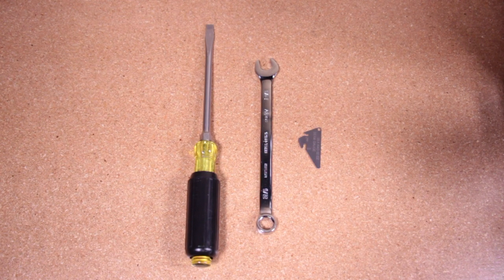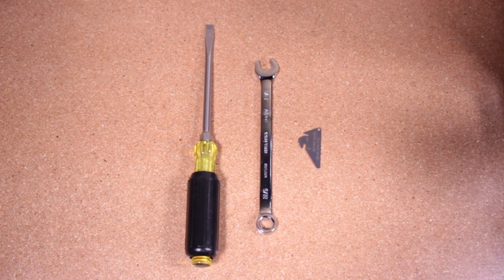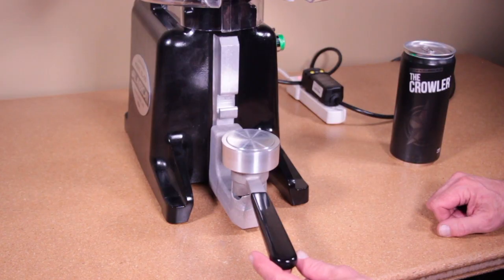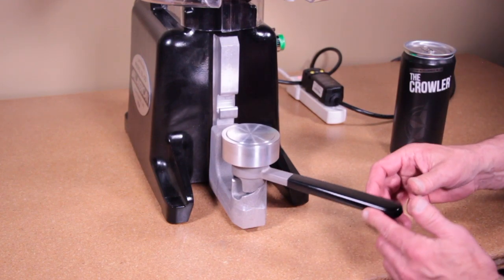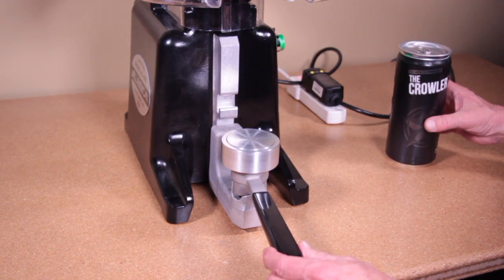If you are using a micrometer to measure your seams, the acceptable seam specs are down below in the video description. Start by loading a crawler and a lid into the seamer. You should feel resistance at the 90 degree mark.